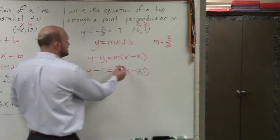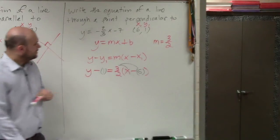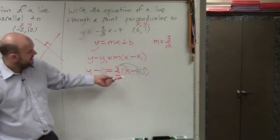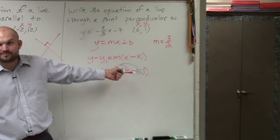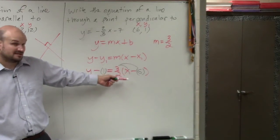Now we just need to apply distributive property. So we have 3/2 times x, which is 3/2x, 3/2 times negative 6. Does anybody remember how to multiply what that would be? That's going to be 9, right?